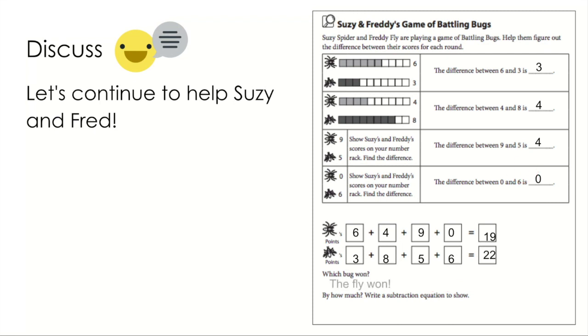Which bug won? The fly won. But by how much? Write a subtraction equation to solve. I could say twenty-two minus nineteen. If I use the mental strategy of a friendly number, I can say twenty-two minus twenty is two. Then I add one more and I get the answer three. Three is the difference. Great job.